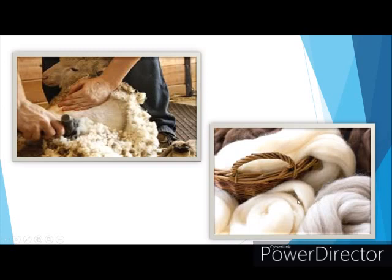We get wool from animals. We cut the hair of animals like camel, goat and sheep, and thus we get wool. Using wool, we make woolen clothes. Woolen clothes are made up of wool.